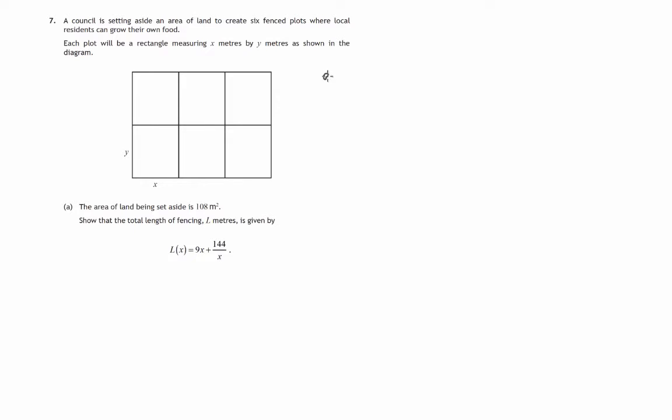So let's have a look at the total length of the fencing. Now you'd look at this and say well there's a lot of horizontal sections all length x, in fact there's nine of them,